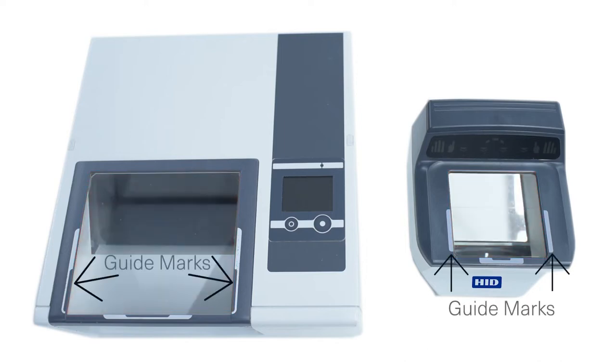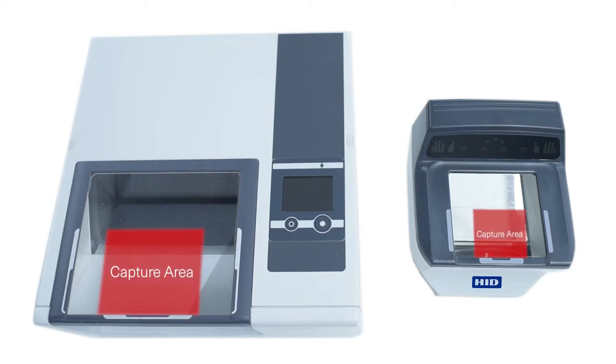Guide marks: these are the graphic indicators on the housing around the platen that provide guidance for finger placement. Capture area: as indicated by the guide marks, this is the capture area for flat and rolled fingerprints. This is the capture area when imaging palm prints on the L-Scan.